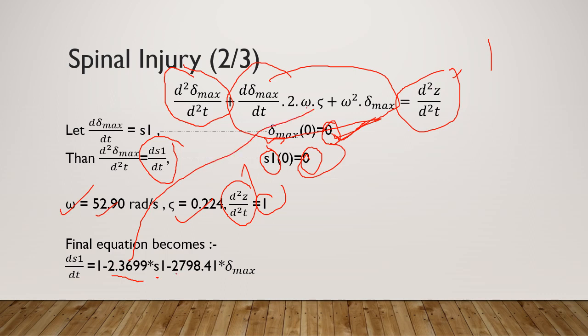2.3699 comes from 2 multiplied by ω multiplied by ζ, and 2798.4 comes from ω² value. Then we have directly multiplied σ_max, which corresponds to this d²z/dt².